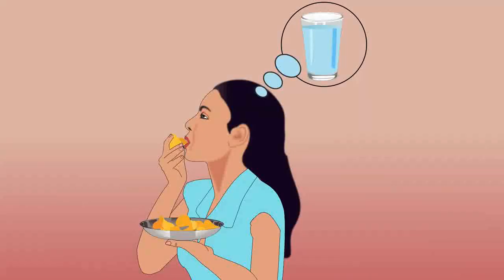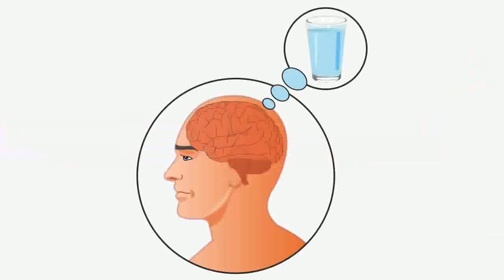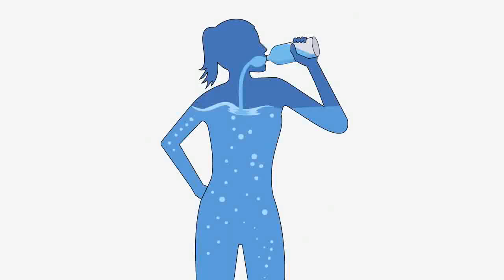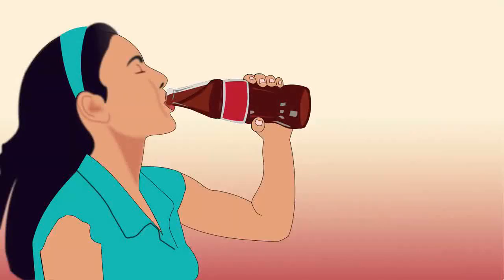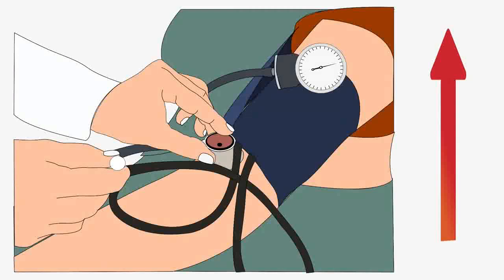Let me give you another example. After eating chips, we usually feel thirsty. This is because sodium levels in our blood increase on eating salty food. The brain then sends signals of thirst so that we drink more water. Drinking water will dilute the sodium levels in the body. But drinking juice or cold drinks will increase the sugar levels in the body, resulting in a rise in blood pressure.